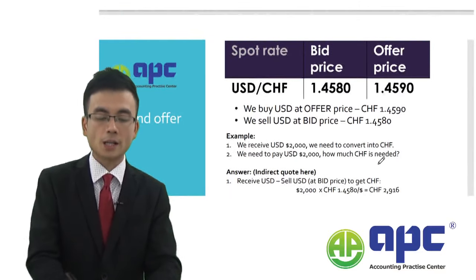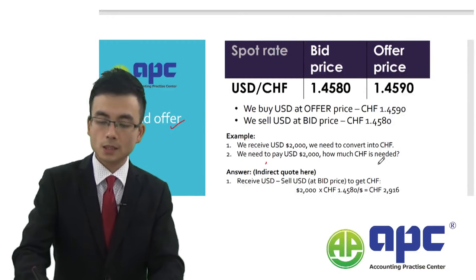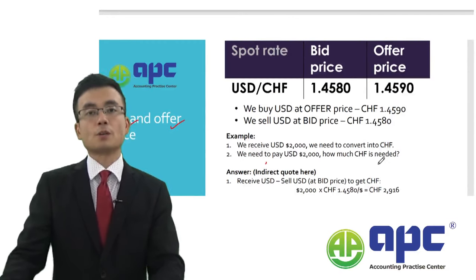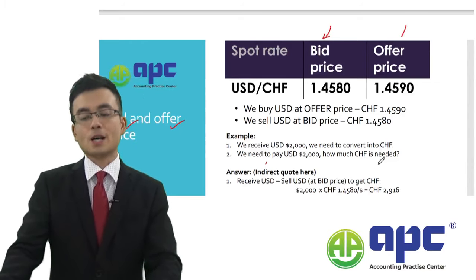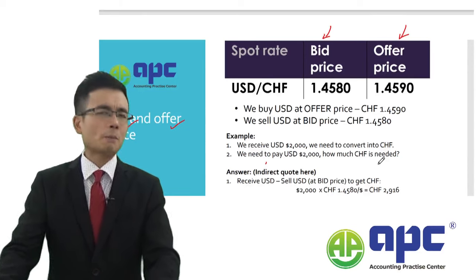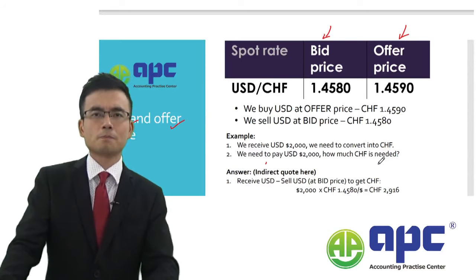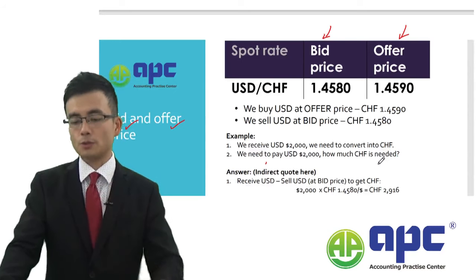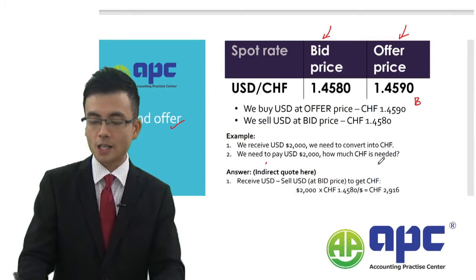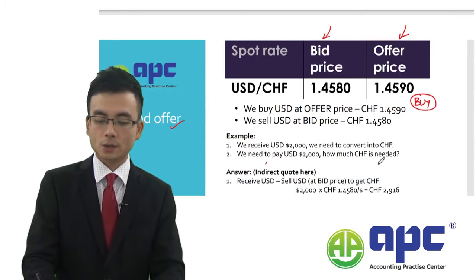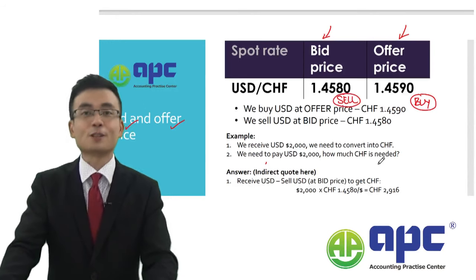The second thing to know is how the bank may make a profit from quoting you the foreign exchange rate. The bank will give you a bid price and an offer price — the bank may buy from you at the bid price, and will sell to you at the offer price. But from a company's point of view, we always buy the currency at a higher price and sell the currency at the lower price, which means at the bid price.